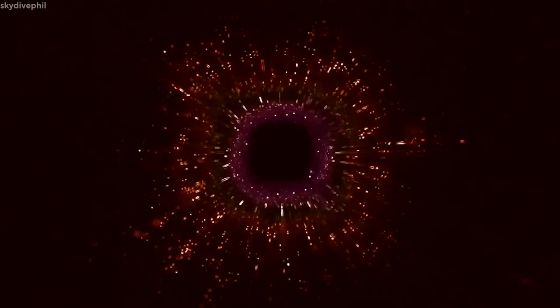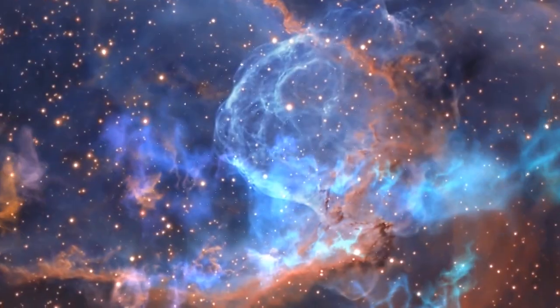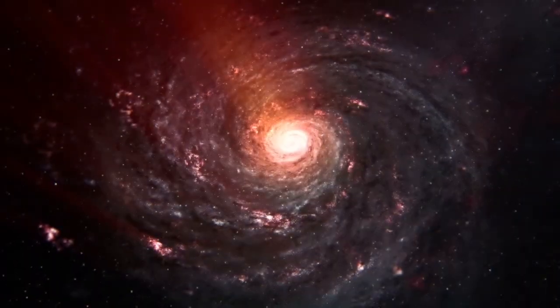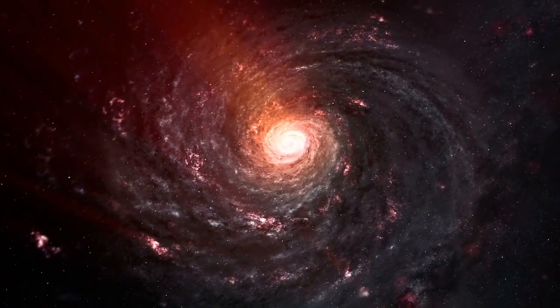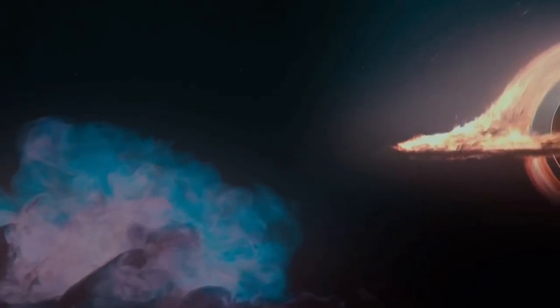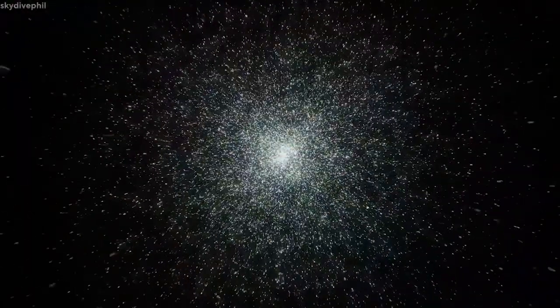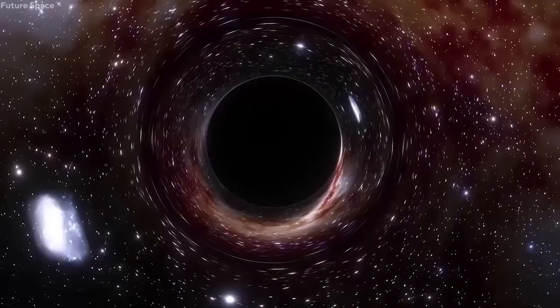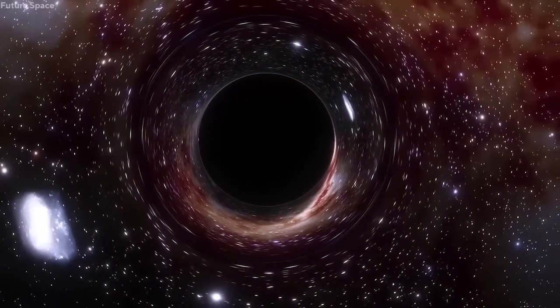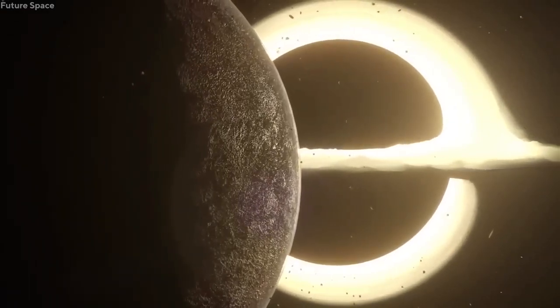Conformal cyclic cosmology is a theory proposed by Roger Penrose that suggests that the universe undergoes an infinite cycle of expansion and contraction. According to this theory, the universe starts from a singularity, expands rapidly during the inflationary period, then eventually contracts and collapses into a black hole. This black hole, in turn, gives rise to a new universe through a process called a big bounce.